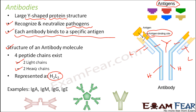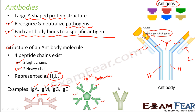Examples of antibodies include IgA, IgM, IgG, and IgE — where 'Ig' stands for immunoglobulin, meaning immune-related globular protein. IgA is a dimer — two Y-shaped structures joined together. IgM is a pentamer — five Y-shaped structures. IgG and IgE are monomers with just one Y-shaped structure each. Different antibodies have different structures and each binds to specific antigens.